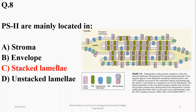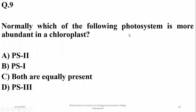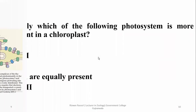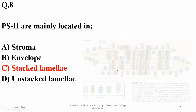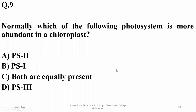Question nine: Which photosystem is more abundant in chloroplasts? From the previous diagram of thylakoid, photosystem two is more common and more abundant, as shown in the diagram — light green represents photosystem one and dark green represents photosystem two. So the right option is beta. Photosystem two is more abundant.